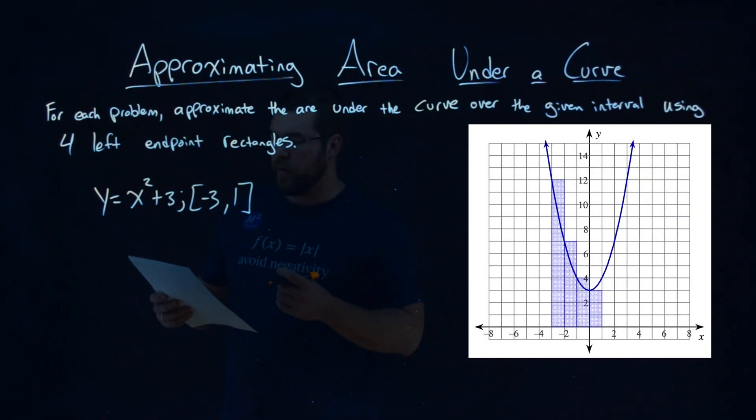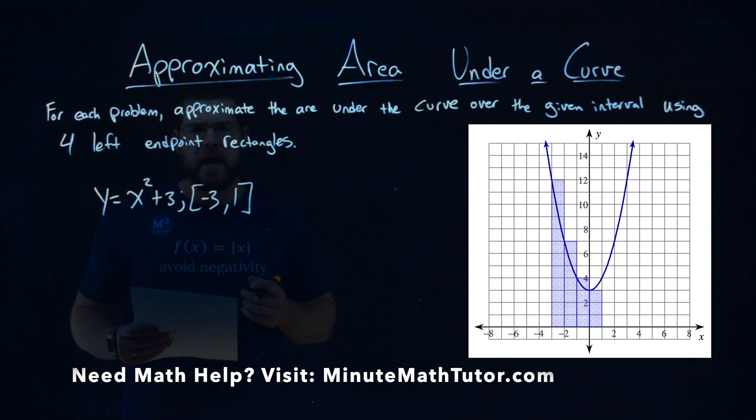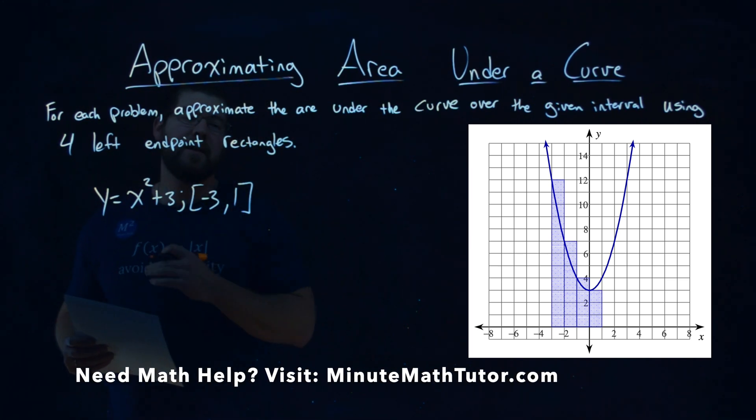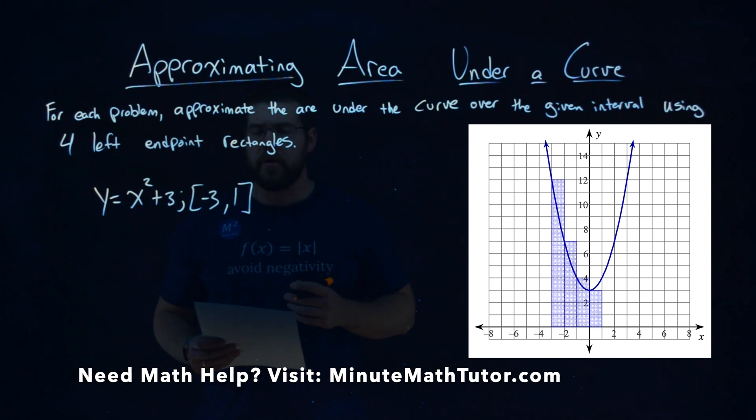We're getting this problem right here: y equals x squared plus 3, on the interval from negative 3 to 1, and we need to find four left endpoint rectangles that approximates the area under the curve.